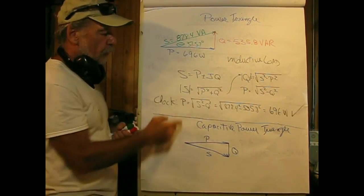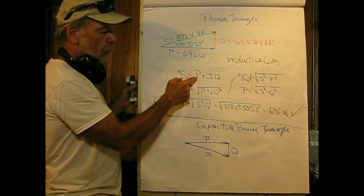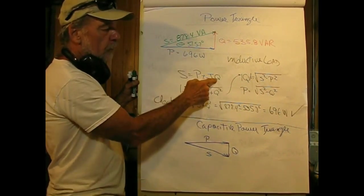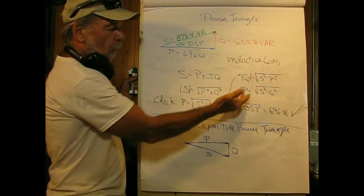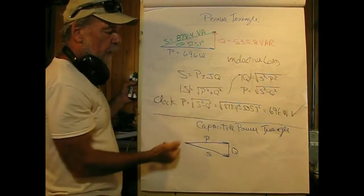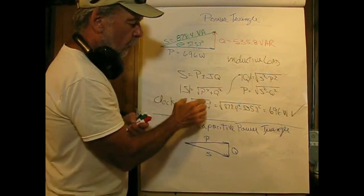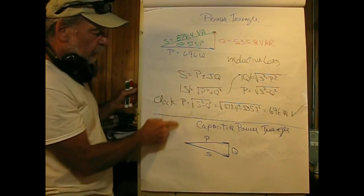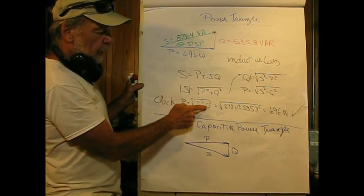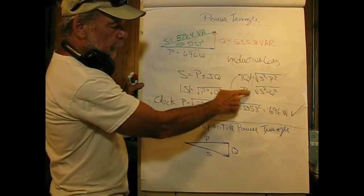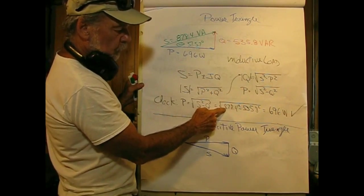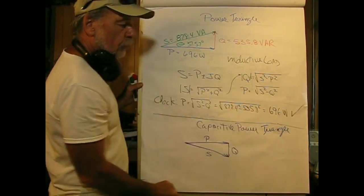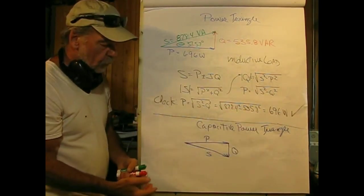By the direction of Q here, we know it's an inductive load. We could say S equals the apparent power equals the real power plus or minus J, meaning an imaginary component Q. We could solve for anything we wanted, knowing any two of these. To do a check, P equals the square root of S squared minus Q squared, and that gives us 696 watts. So that seems to work out fine.